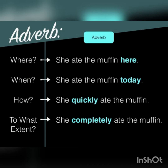Let's look at some examples of adverbs. For 'where': 'She ate the muffin here' — here answers the question where, so 'here' is an adverb. For 'when': 'She ate the muffin today' — today answers the question when, so 'today' is an adverb. For 'how': 'She quickly ate the muffin' — quickly answers the question how, so 'quickly' is an adverb. For 'how much': 'She completely ate the muffin' — completely is an adverb as it answers the question of how much.